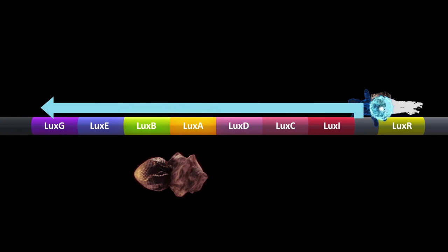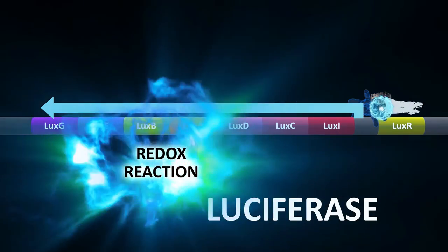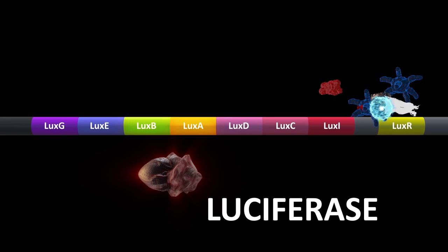and causes tons and tons of LUX proteins to be made. The LUX-A and LUX-B genes produce proteins that together create the enzyme luciferase. Luciferase catalyzes a redox reaction that produces blue-green light, and that's how you get the bioluminescence. Of course, activating transcription also means that there is now more LUX-I and more LUX-R, so concentrations of autoinducer spiral even higher, resulting in more and more light.